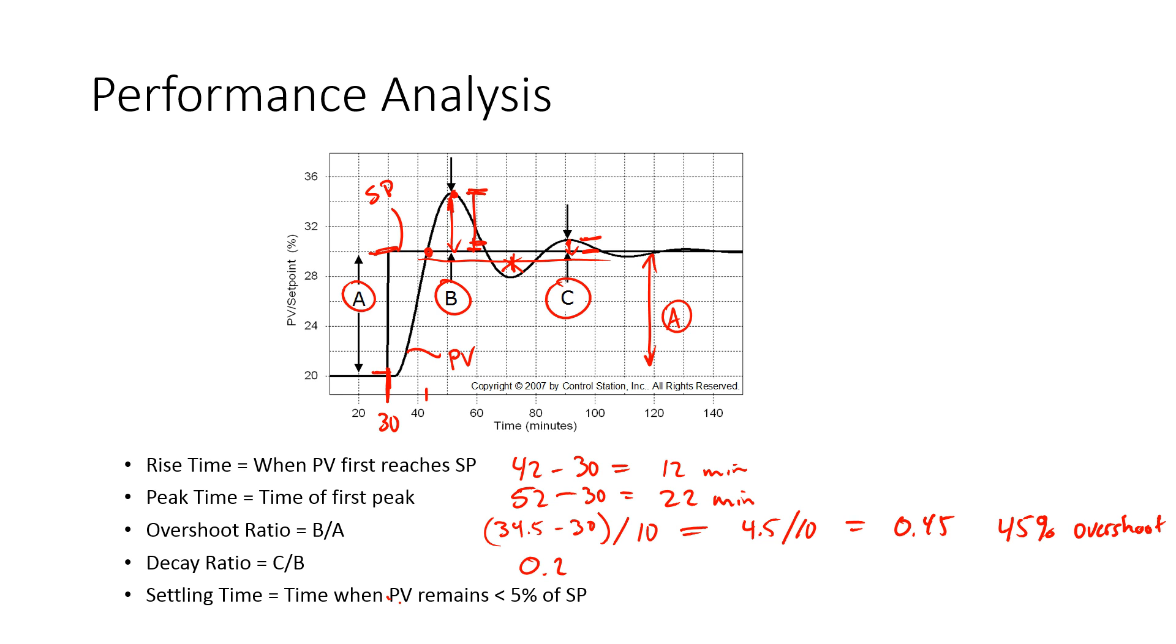Settling time is when the PV remains within 5% of the set point, now 5% of the delta. So take your A and go 0.05, and then you draw your bounds here, and when this PV stays within that, the first time that it enters that and then stays within that 5% band, that's when we call the settling time.